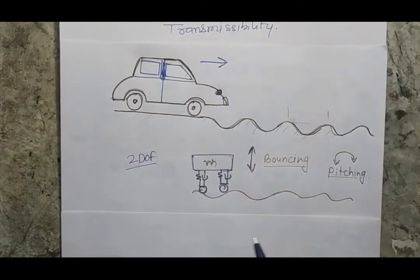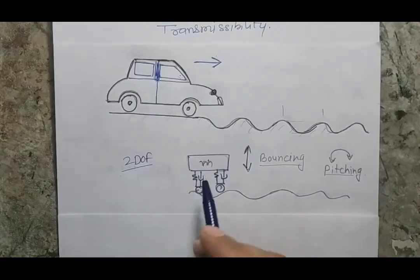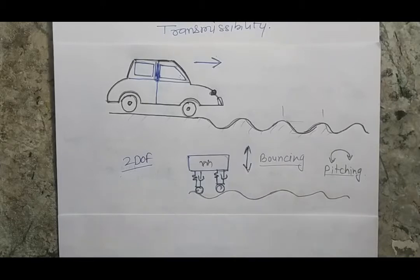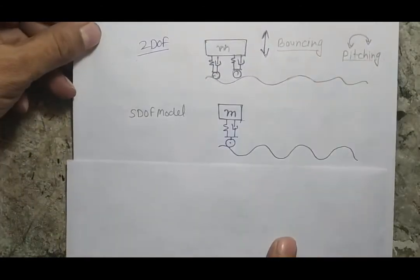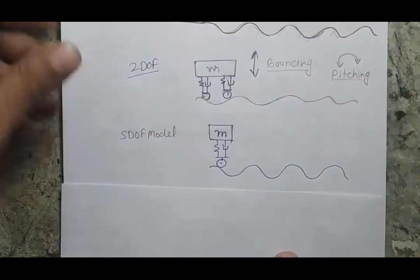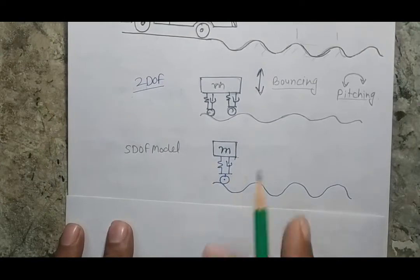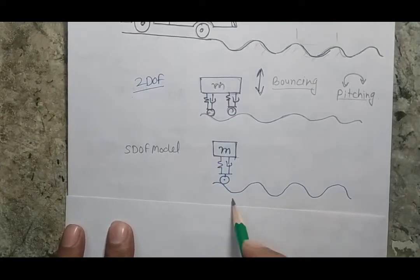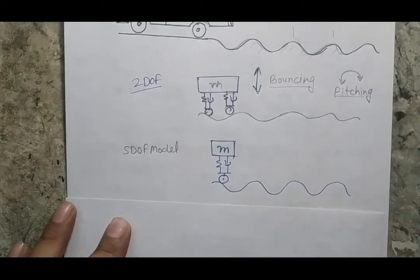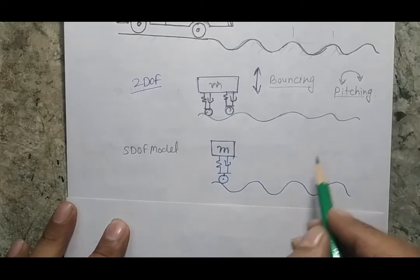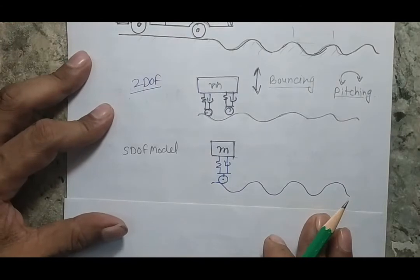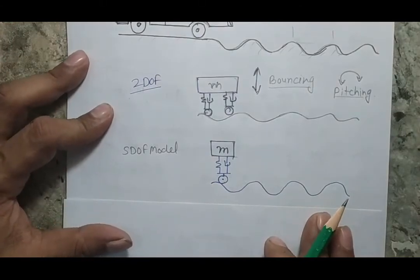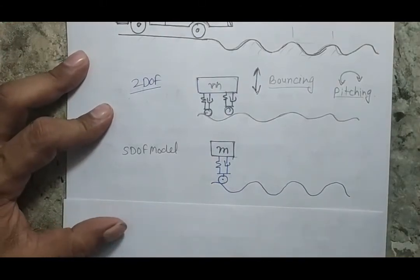One way to represent this car is as a two degree of freedom system model, but in the current session we are talking about a single degree of freedom system. The single degree of freedom model is a simple mass with one spring and one damper moving on the wavy road. This is a case where excitation comes from the base, meaning this is a case of base excitation or displacement transmissibility.